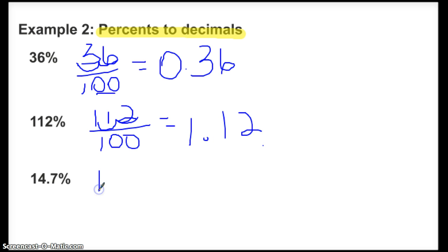And then finally, I have 14.7%, so I just put 14.7 over 100. I divide by the 100. I move my decimal, which is right here in this case, two places to the left, and I wind up with 0.147. Let's see, next slide, example three.